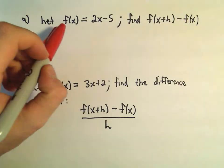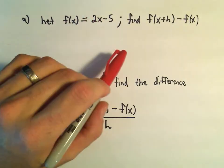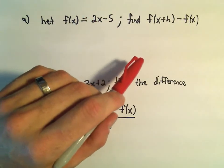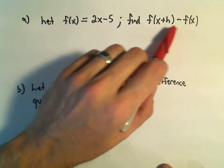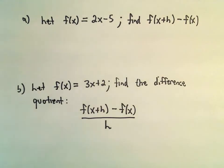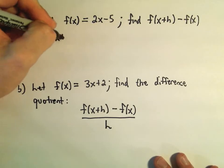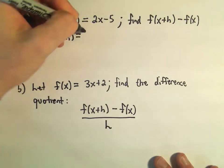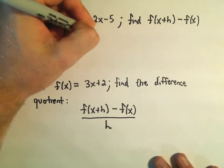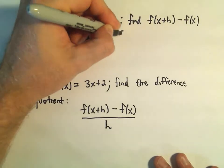Okay, in part a we've got this function f(x) = 2x minus 5. We're not going to do all the difference quotient, we're just going to find the numerator, f(x+h) minus f(x). Well, we've already got our f(x). To get f(x+h), what do we do? Everywhere there's an x, we replace it with x plus h. So 2 times (x+h) minus 5.